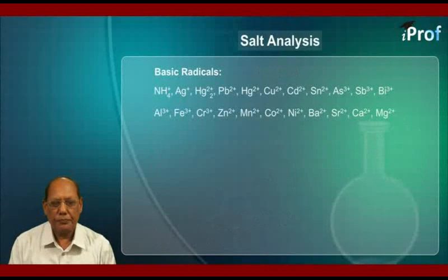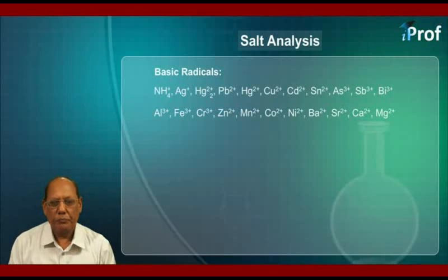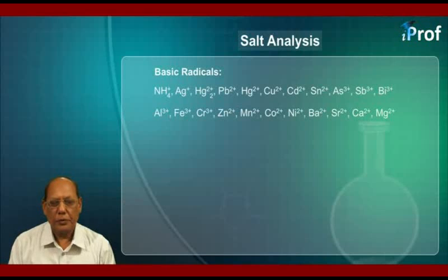In the case of basic radicals, we have to study: ammonium ion, silver, mercurous, lead, mercuric, cupric, cadmium, tin, arsenic, antimony, bismuth, aluminium, iron, chromium (Cr³⁺), zinc, manganese, cobalt, nickel, barium, strontium, calcium, and magnesium ions.